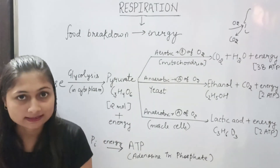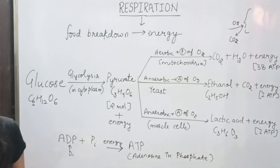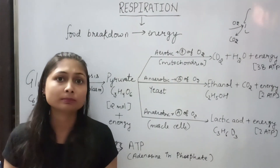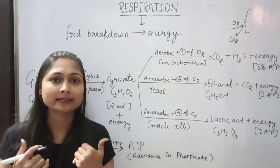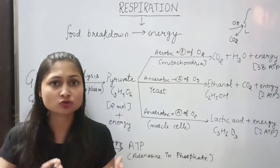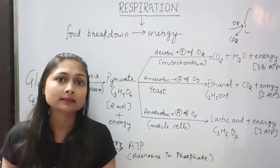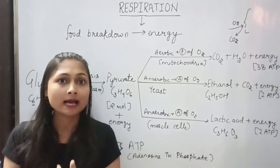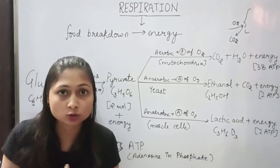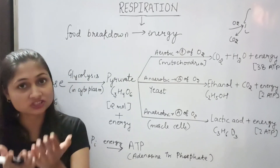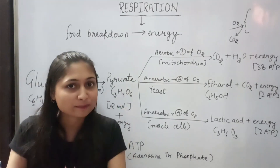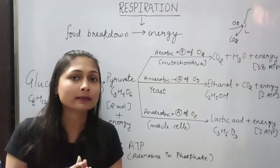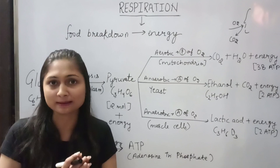Now let's see in plants when respiration happens. In photosynthesis, plants take in carbon dioxide and release oxygen, which occurs in the daytime. But that is about photosynthesis, which is the process by which plants make their food. If we talk about respiration, plants also take in oxygen and release carbon dioxide gas — they do this day and night. But photosynthesis is only in the daytime.